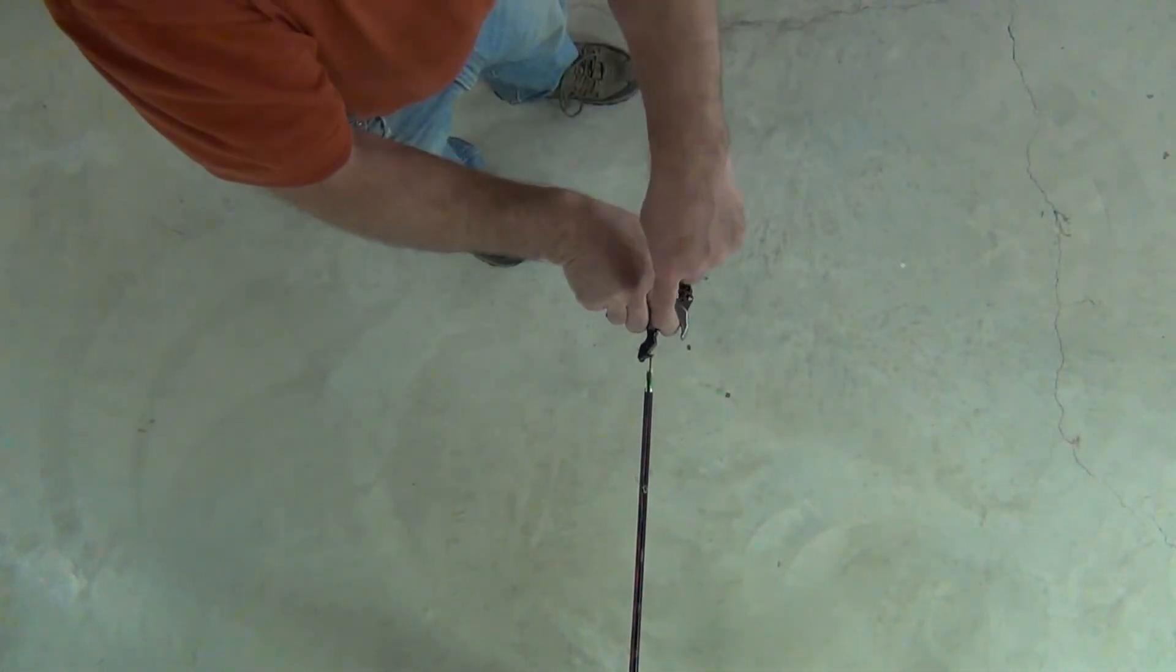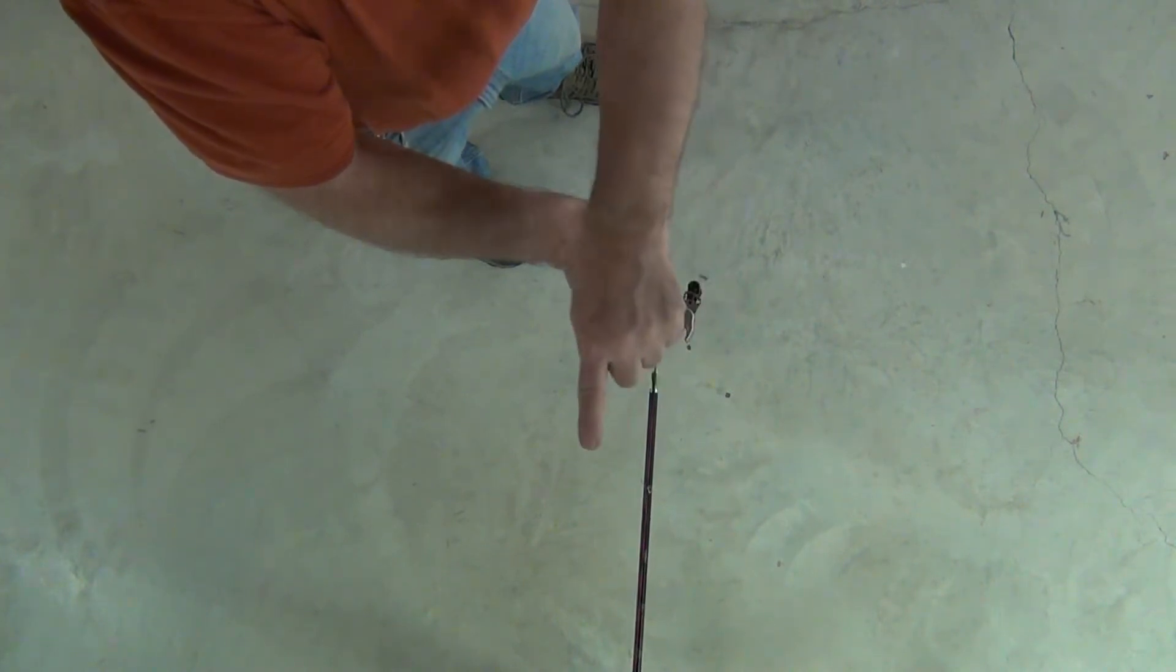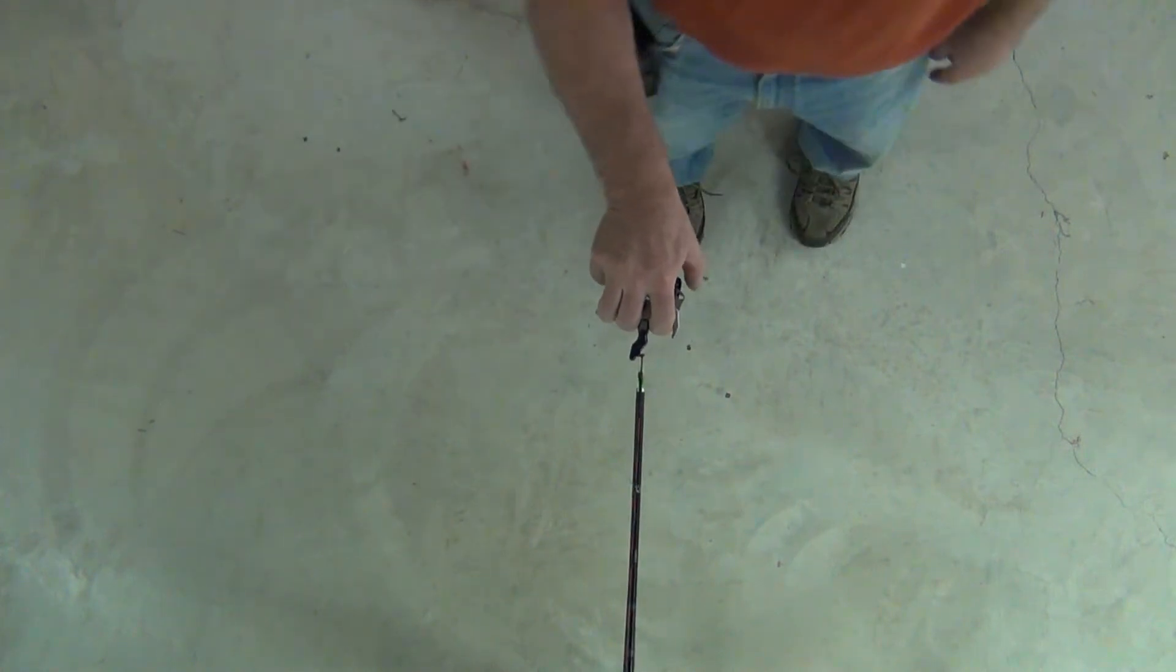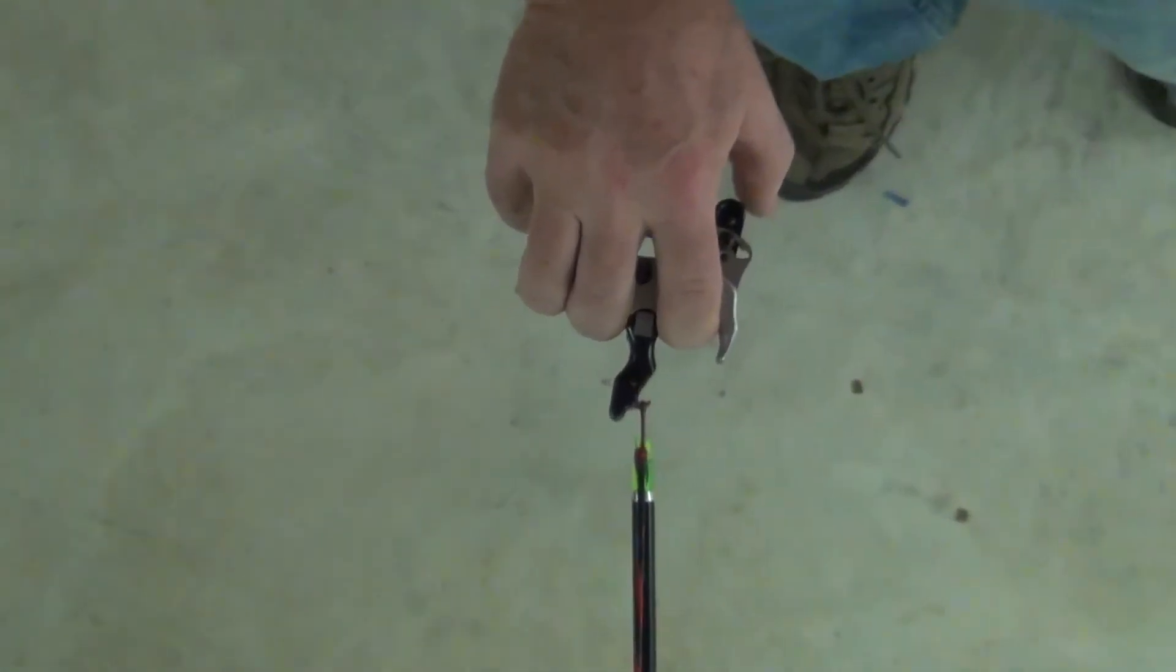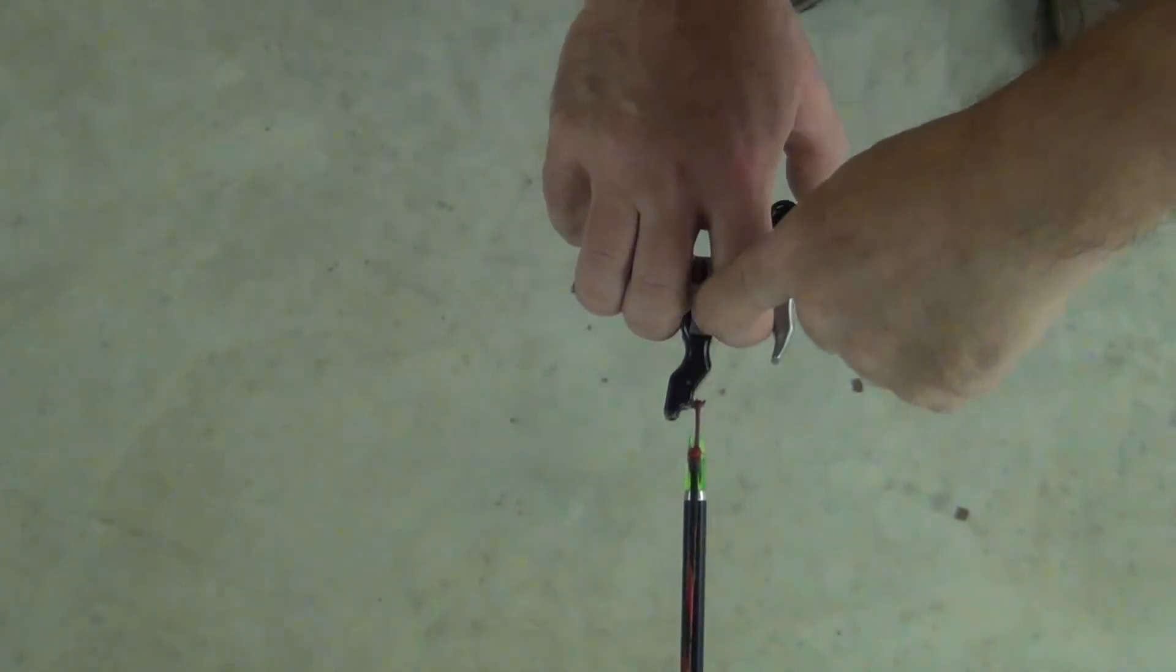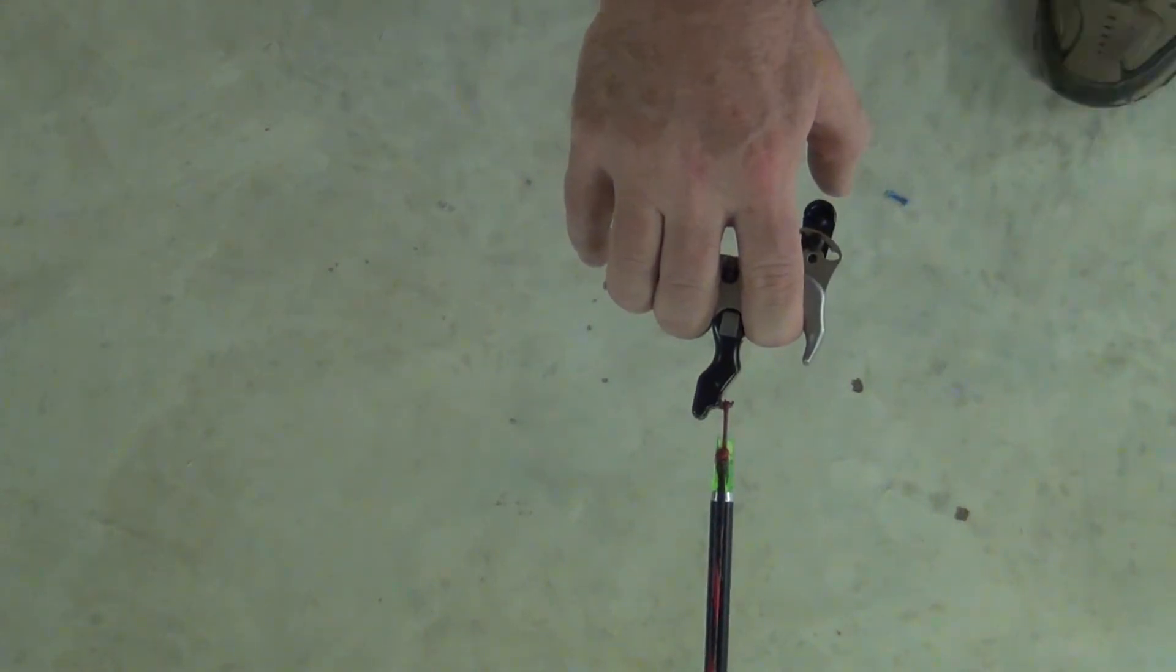Again, through the release, through the hook, through the D-loop, to the string, to the cams. Release, hook, D-loop, string, cams. They're all in a straight line.